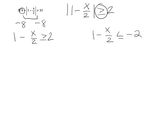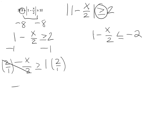Now, you want to solve this like any other linear equation — we're going to solve for x. For the first expression, we isolate x by subtracting 1 from both sides, which leaves you with negative x over 2 is greater than or equal to 1. Multiply both sides by 2 to eliminate the denominator, giving negative x is greater than or equal to positive 2. When you divide by a negative, you have to flip your inequality sign, so this becomes x is less than or equal to negative 2. That is your first solution.